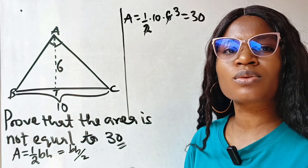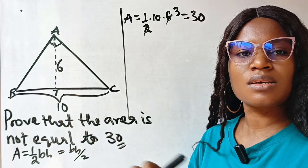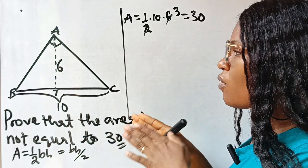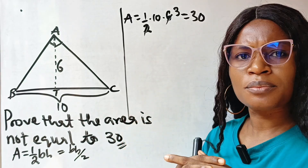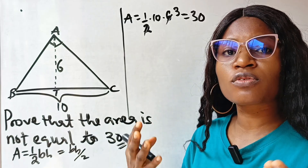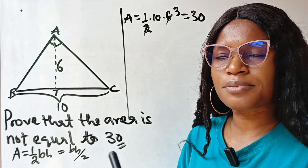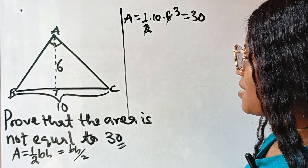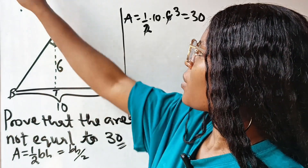Since 2 divides 6 we have 3, and this gives us 30. But we are told that 30 is not the area of this triangle, and we need to prove how that is so.